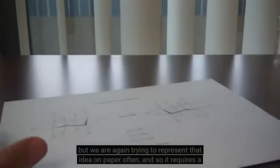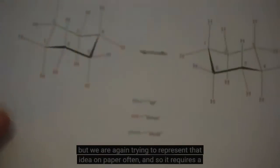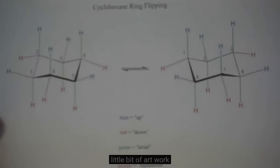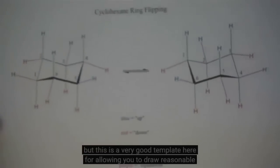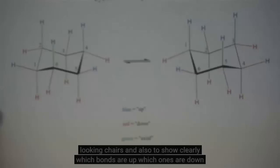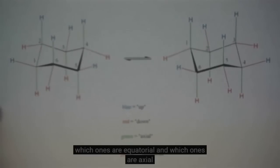But we are trying to represent that idea on paper often, and so it requires a little bit of artwork. This is a very good template for allowing you to draw reasonable looking chairs, and also to show clearly which bonds are up, which ones are down, which ones are equatorial, and which ones are axial.